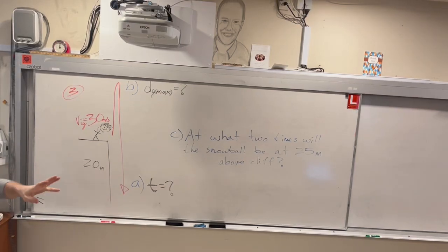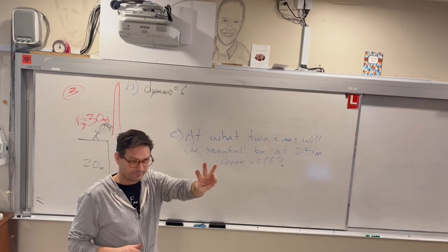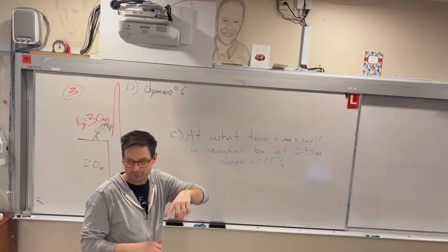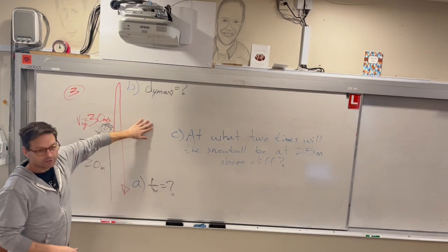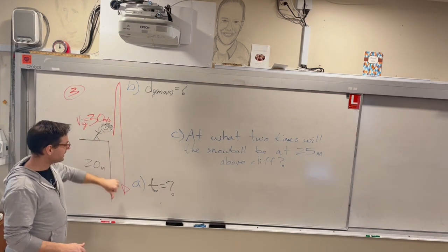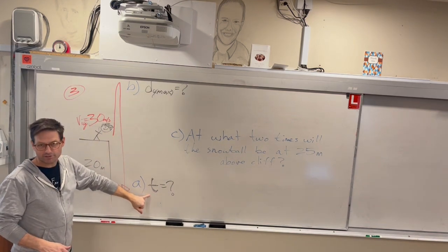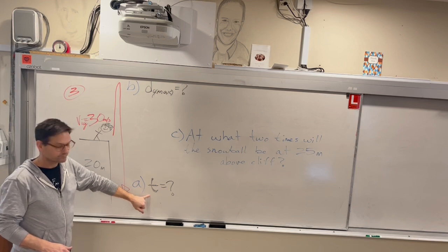This is snowball problem number three. The first two I did, I filmed already, so I'll put this up later. Jordan's throwing a snowball straight up and it comes straight down, and the first thing we need to do is look for the time.